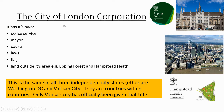The City of London Corporation runs the City of London. It has its own police service, mayor, courts, laws, flag, and land outside its area — including Epping Forest, which stretches north through London and beyond, and Hampstead Heath, both owned and run by the City of London Corporation. The Guildhall is the administrative headquarters of the City of London.